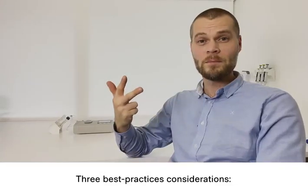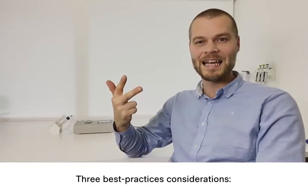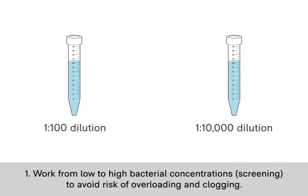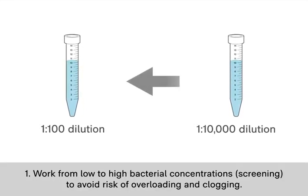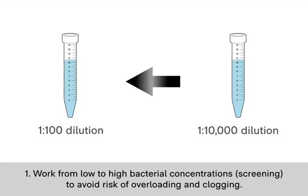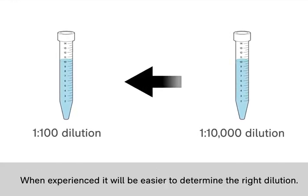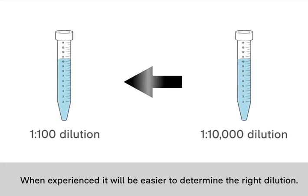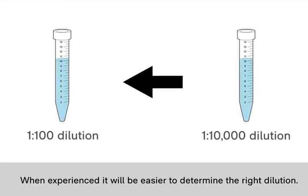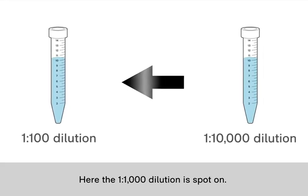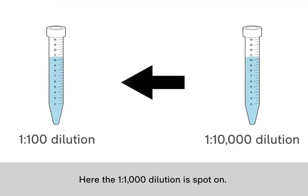There are three best practice considerations I'd like to highlight at this point. The first take-home message is that I always work from low to high bacterial concentrations. This way, the risk of overloading and clogging is greatly reduced. When you know your culture better, it's easier to hit a good dilution from the start and get fast results. In this example, with the E. coli overnight culture, the 1 to 1,000 dilution is spot on.